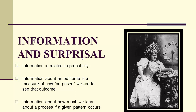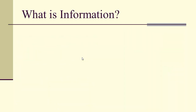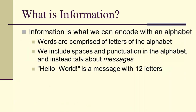Information is related to probability — it's a measure of how surprised we are to see an outcome. Information in particular tells us about patterns. So what is information?